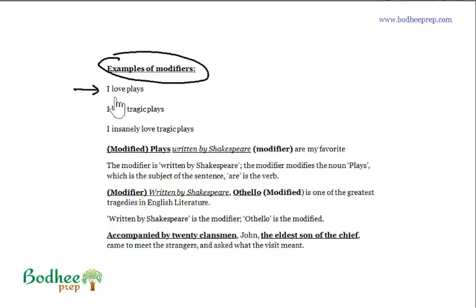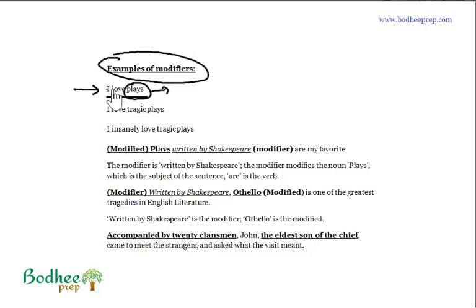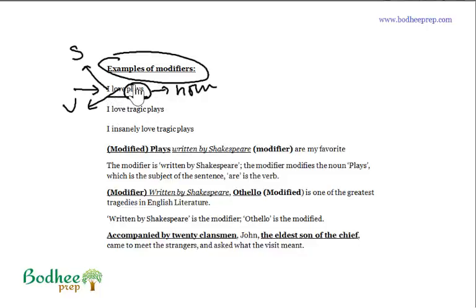Let's look at the first sentence: 'I love plays' — plays as in plays by Shakespeare, not the word-form 'plays.' In this simple sentence, 'I' is the subject, 'love' is the verb, and 'plays' is acting like a noun — the object. There is no modifier apparently in this sentence.